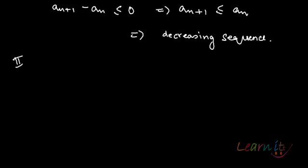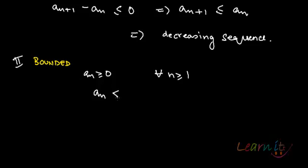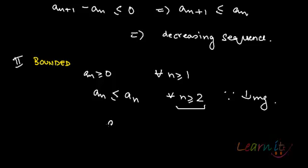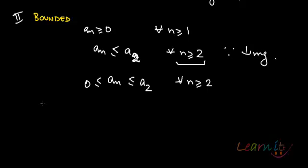Number 2 is boundedness — whether it is bounded or not. We have aₙ greater than or equal to 0 for all n greater than or equal to 1, by definition. Since it's a decreasing sequence, aₙ will be less than or equal to a₂ for all n greater than or equal to 2. So aₙ lies between 0 and a₂ for all n ≥ 2, which means aₙ is clearly bounded.